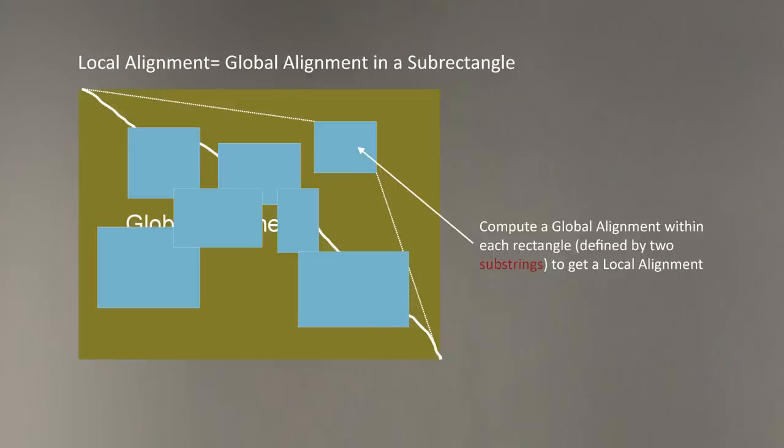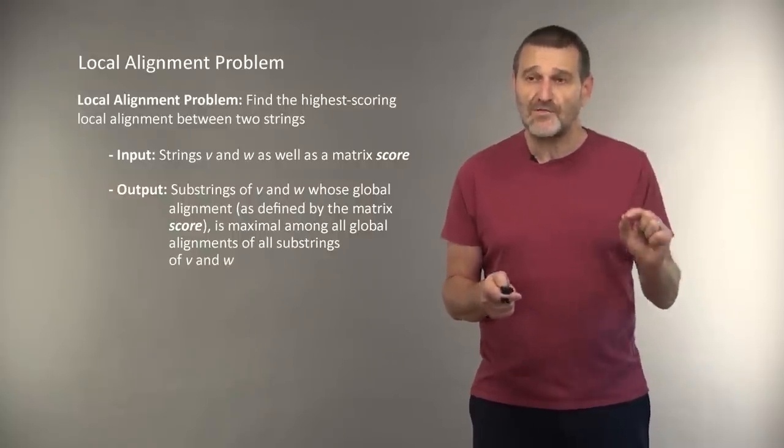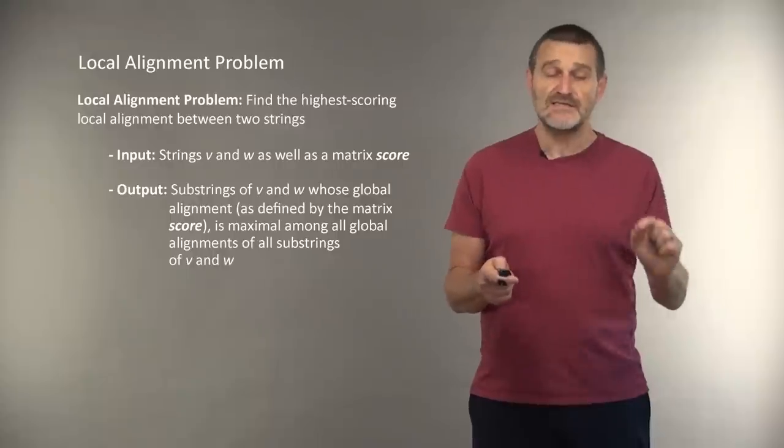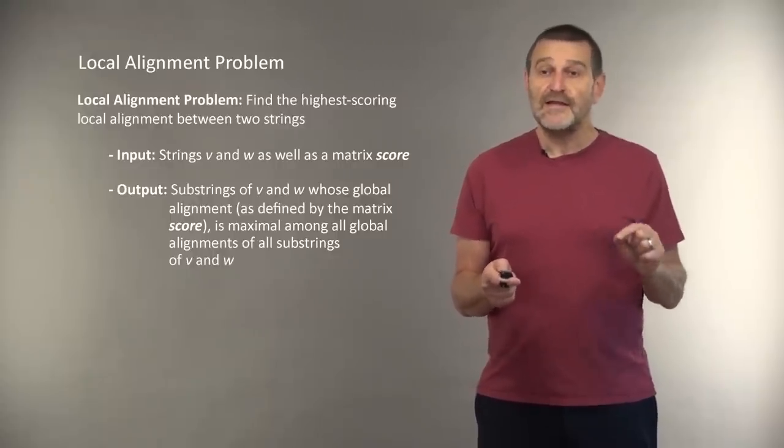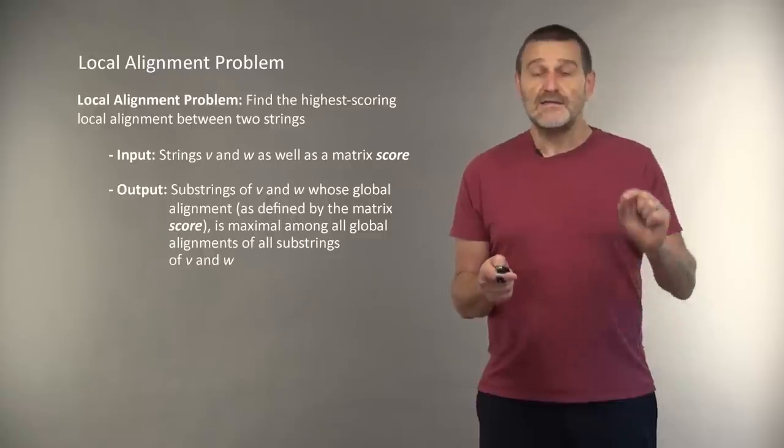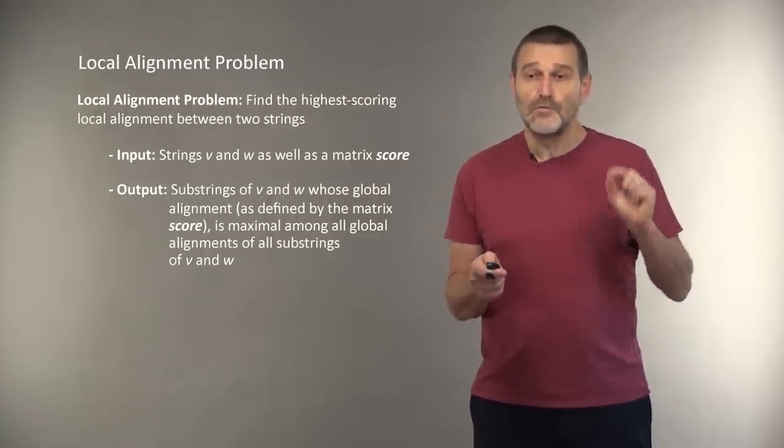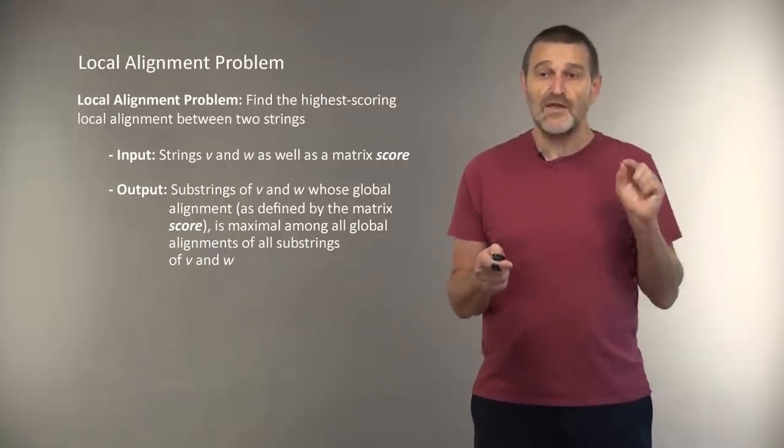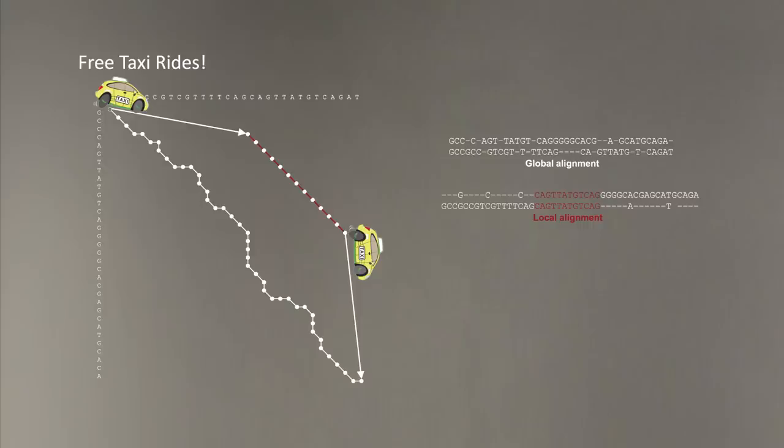What can we do to come up with a practical local alignment algorithm? The first thing we need to do is to formulate the local alignment problem. The input is strings V and W and a scoring matrix score. And output is substrings of the entire strings V and W whose global alignment, as defined by scorer, is maximum among all global alignments of all substrings of V and W.